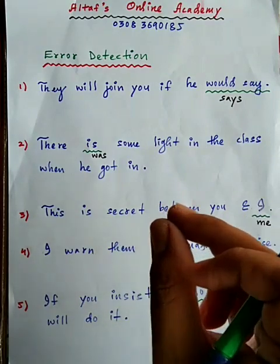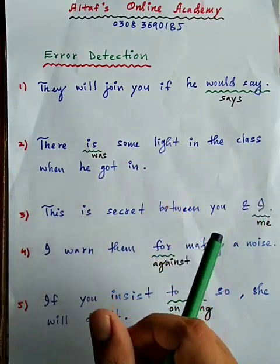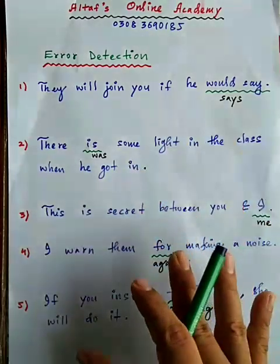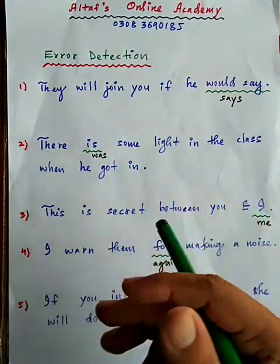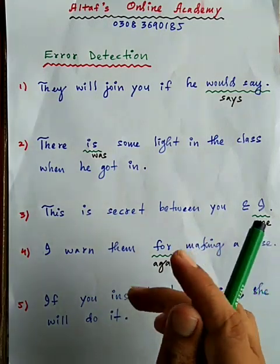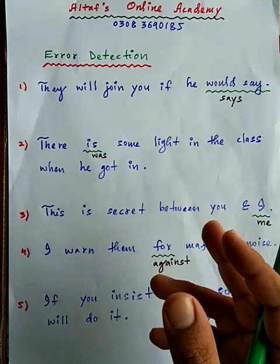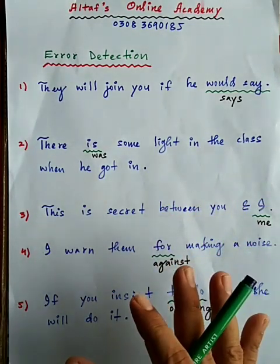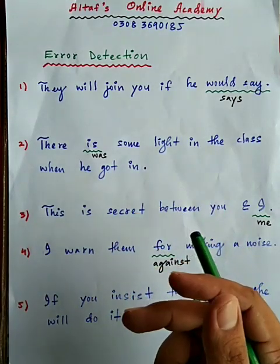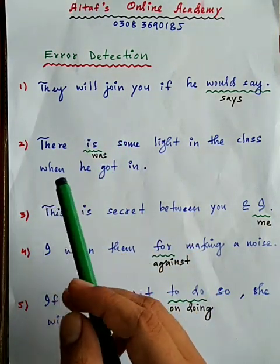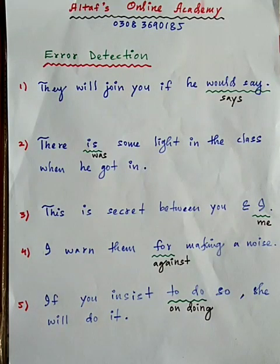یہ چیز ہم اس طریقے سے ساتھ ساتھ کام کرتے رہیں گے، انشاءاللہ۔ تو آج error detection میں پانچ types کے sentence structures میں نے لکھے ہیں جن میں error دی گئی ہے۔ آپ کو صحیح answer detect کرنا ہوگا۔ تو اب پہلا ہمارا sentence آج کا کیا ہے، وہ دیکھتے ہیں۔